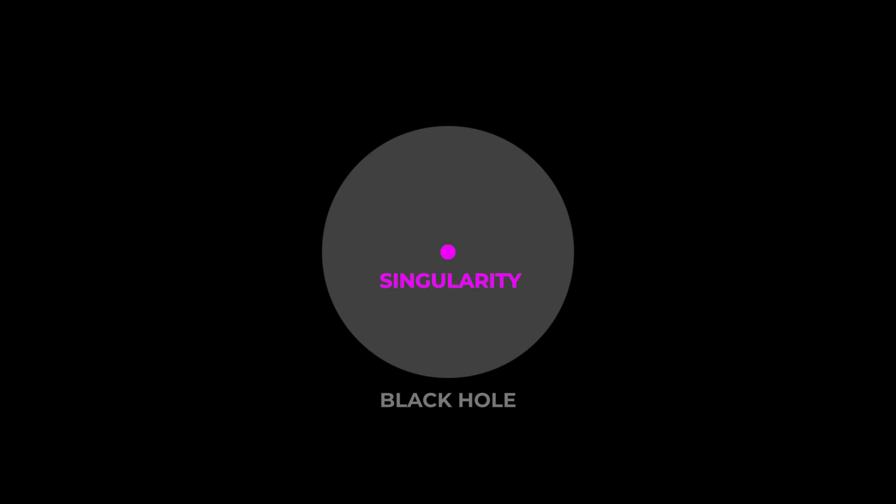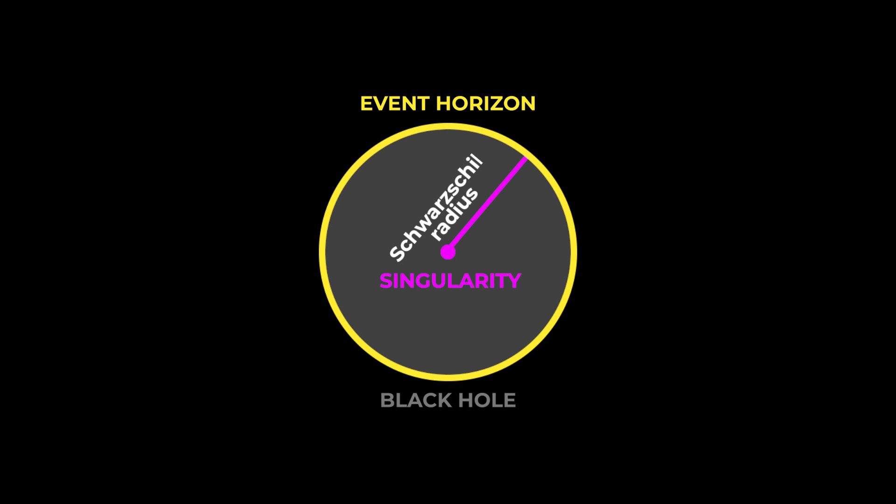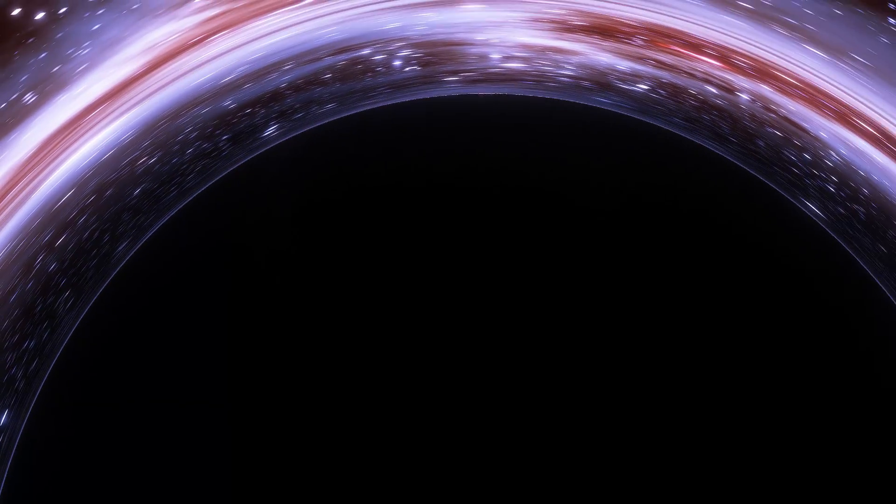The region from a singularity, the center of a black hole, up to the event horizon, called the Schwarzschild radius, makes up the black hole. Everything inside it is hidden from us, forever.